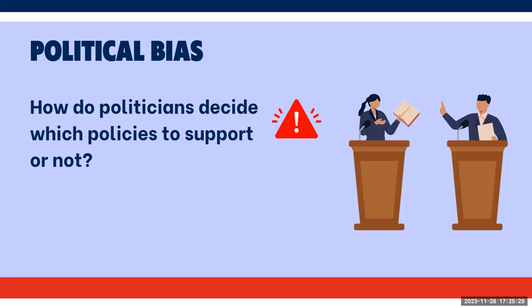After that quick demo on how to find government documents, I also want to bring something to your attention: political bias. How do politicians decide which policies to support or not? Some of the government documents you might find online might be a bit biased, so it's important to keep that in mind. Political bias means that politicians, government entities, or stakeholders will present information to highlight a problem and offer a solution that favors their own political position, making their personal position appear more favorable. So they have an agenda and they're trying to push it — we have to be aware of that.